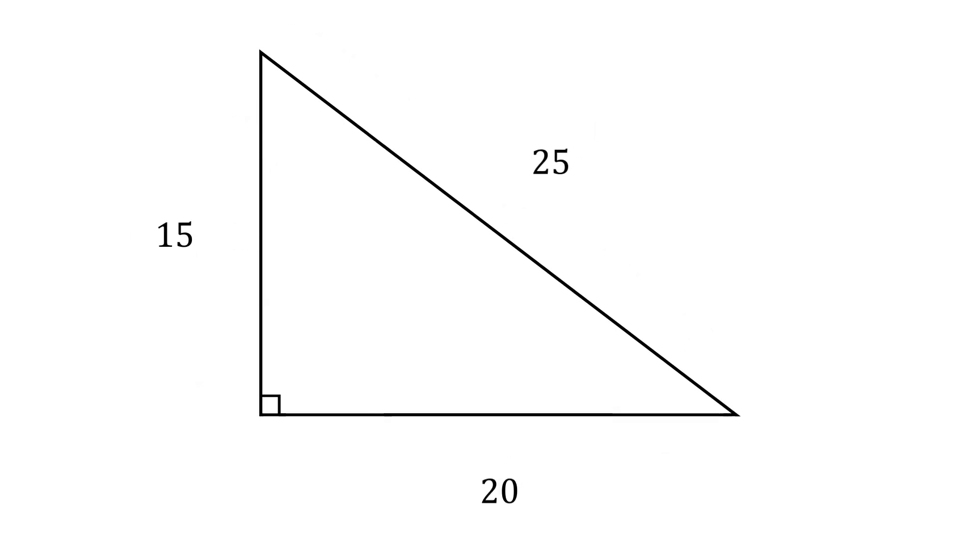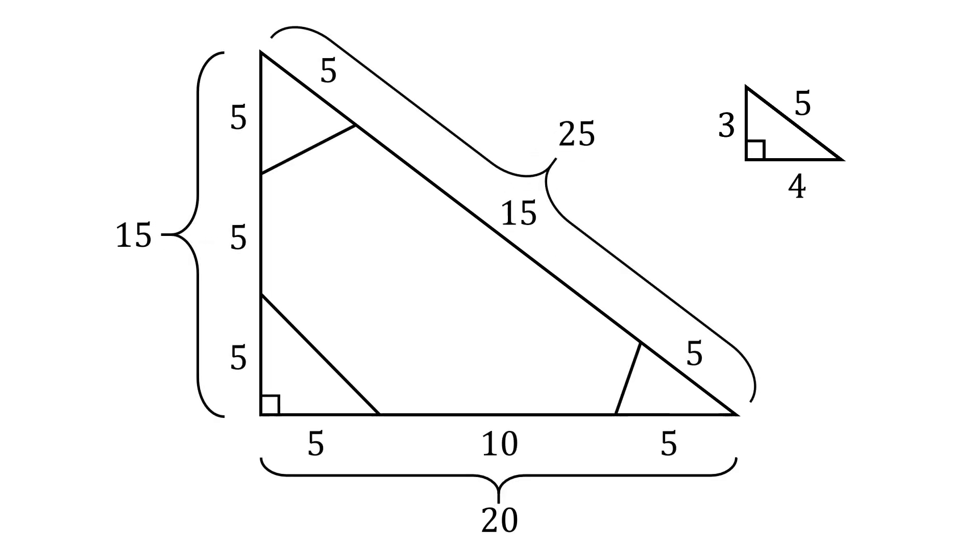From here, we'll notice that this right triangle has sides in the ratio of 3 to 4 to 5. So it's a scaled up version of the 3-4-5 right triangle. We thus can use similar triangles to deduce the lengths of the altitudes of the two triangles in the corners.